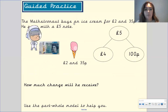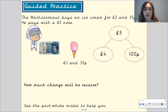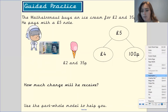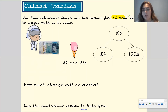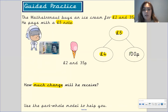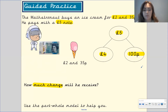The next question: the master buys an ice cream for two pounds and 35 pence, and he pays with a five pound note. The ice cream was two pounds and 35 pence. Now we want to work out how much change he is going to receive. If you have a look at this part-whole model, the five pound note has been split into four pounds and 100 pence. So what do you think we're going to do next? Pause the video to have a think. We're going to take the pounds away from the pounds and the pence away from the pence.